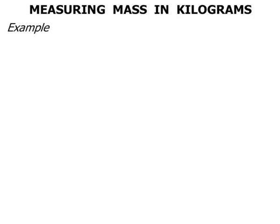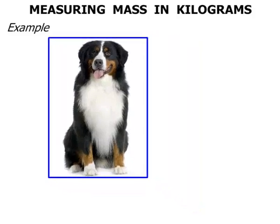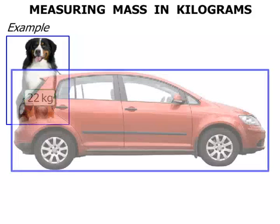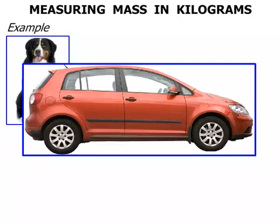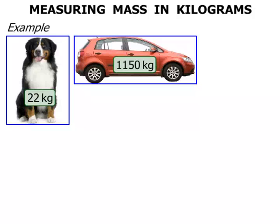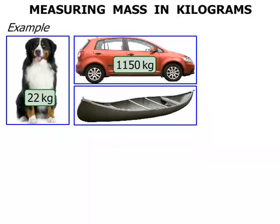In this lesson we take a look at measuring mass in kilograms. For example, let's consider this dog firstly — the dog has a mass of 22 kilograms. This small red car has a mass of 1,150 kilograms, so that's a lot more. This canoe has a mass of 52 kilograms.